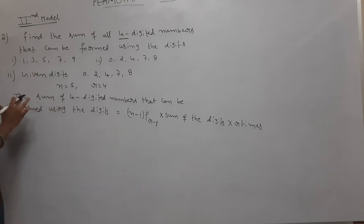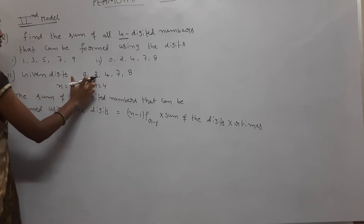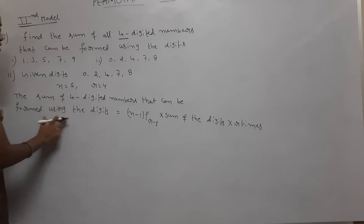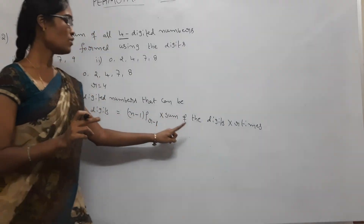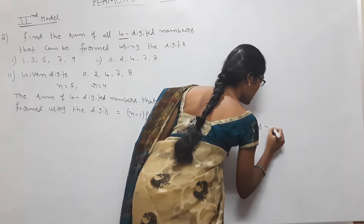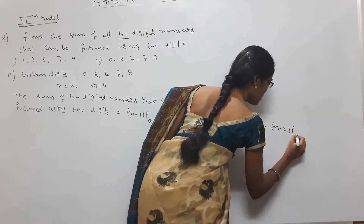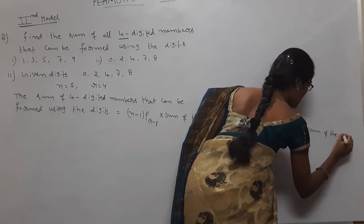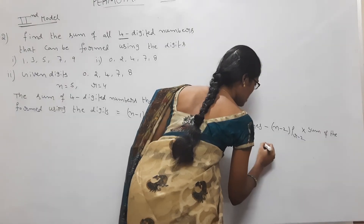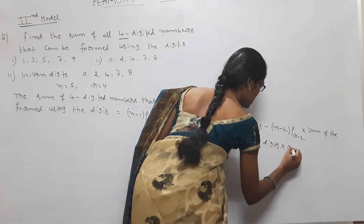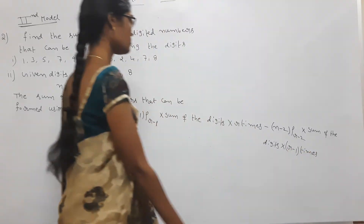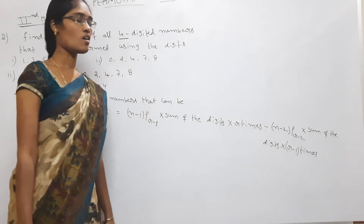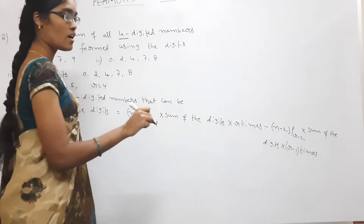Now the second question uses digits 0, 2, 4, 7, 8, which includes zero. Here also n = 5 and r = 4. The sum of 4-digit numbers that can be formed is given by a modified formula: (n−1)P(r−1) × sum of digits × r times, minus (n−2)P(r−2) × sum of digits × (r−1) times.